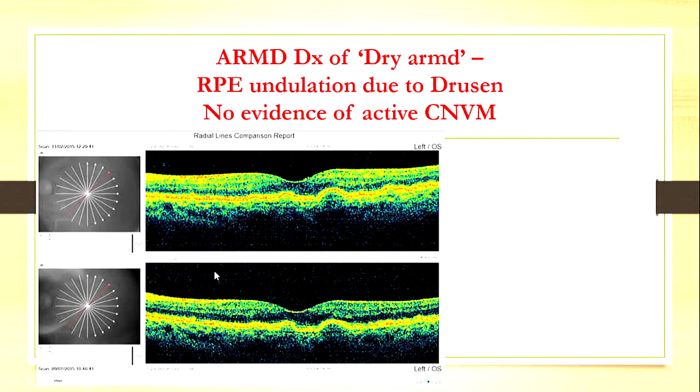What about this? These are undulations. There's no active CNV. This is a dry ARMD due to fairly large drusen.